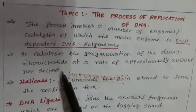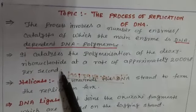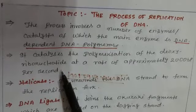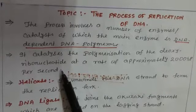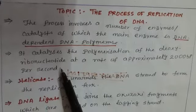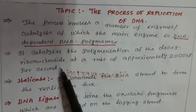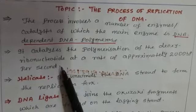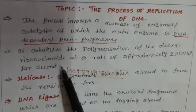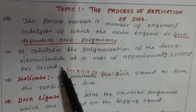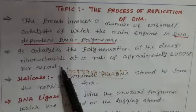It means when the DNA makes its own replica or its own copy, it is at a fast rate. In one second, it can join 2000 base pairs according to the rule of complementary base pairing.